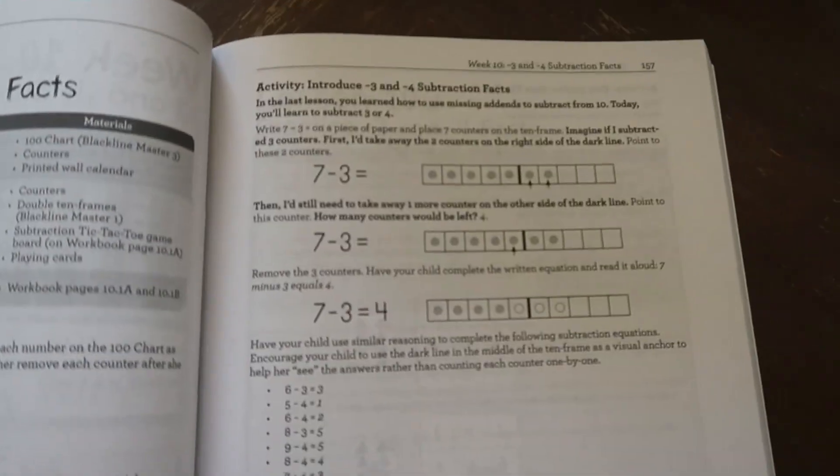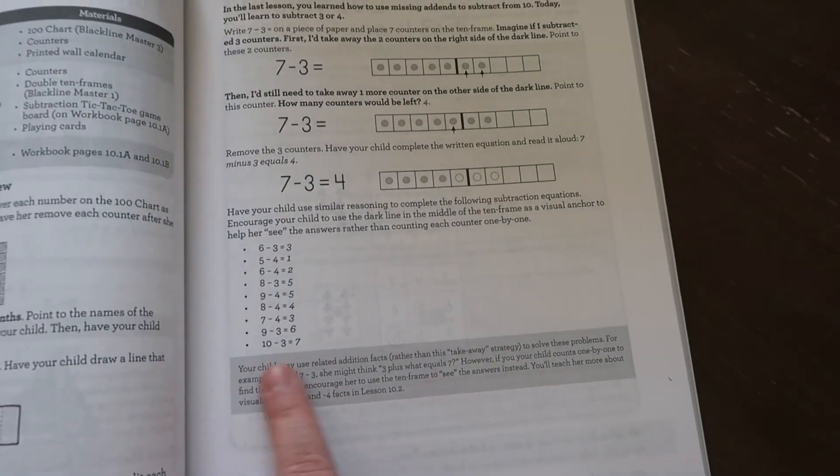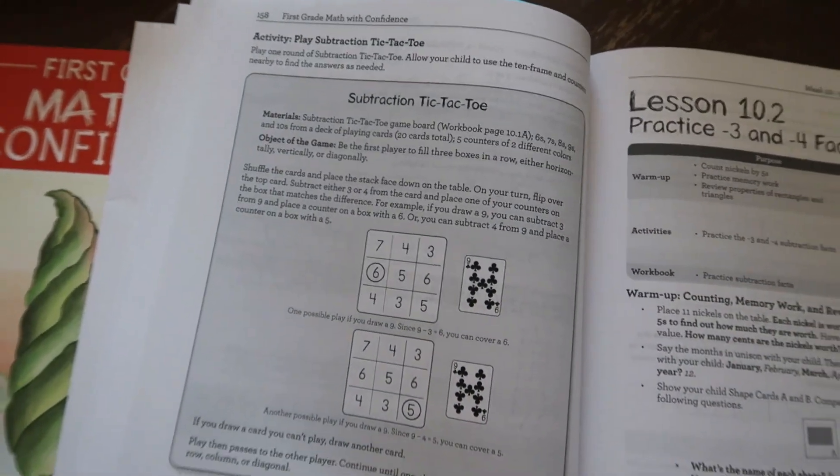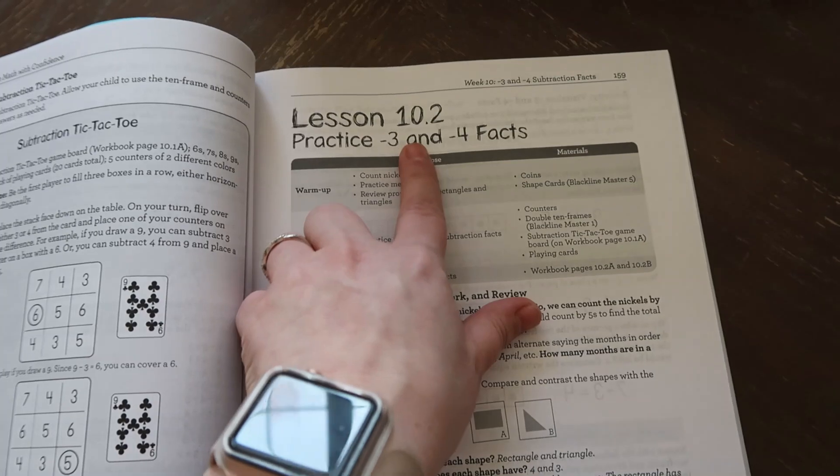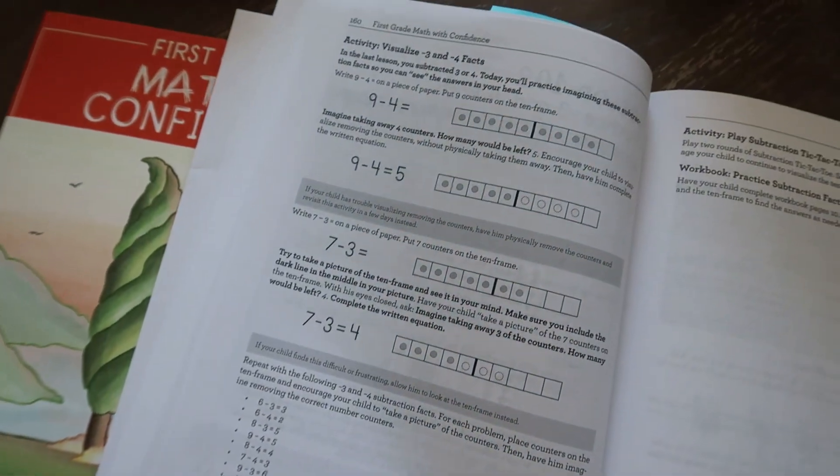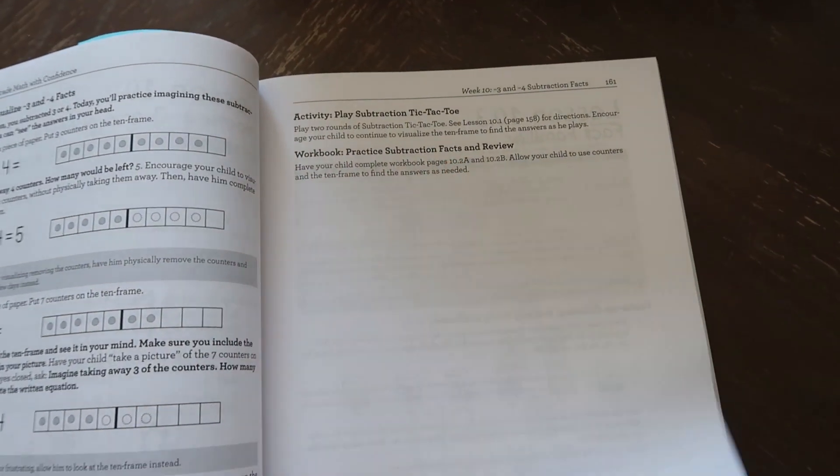Then you're going to do the activity that kind of teaches the lesson, and there's these nice gray boxes down here to help you. Here is the game, the subtraction tic-tac-toe game that you will be playing, and then it has your workbook pages. So on this day you're learning minus three and minus four facts. And again you have your warm-up, activity, and workbook pages. There's your lesson and then you can play the game again and then your workbook pages. So that is kind of how it goes every day.